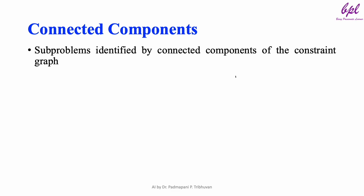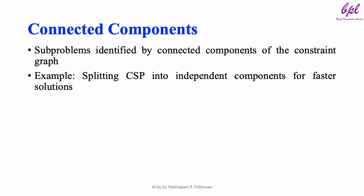Connected components in CSPs are groups of variables that are directly or indirectly connected by constraints. Dividing problems into such components helps reduce complexity. For example, instead of solving a single problem with 80 variables, splitting it into four subproblems drastically lowers computational cost. If we divide a problem into c different connected components, then complexity drops from O(d^n) to O(d^(c*n/c)).